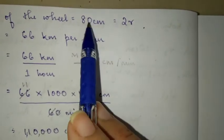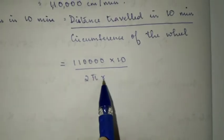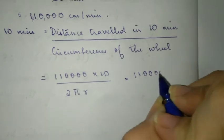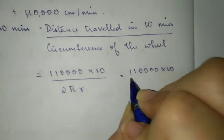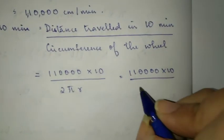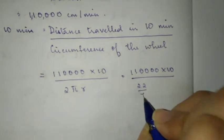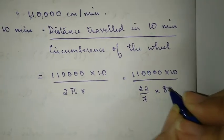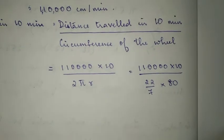Now 2r is 80 centimeter, so 2 into r is 80 centimeter. Substitute: 110,000 into 10 divided by 2r which is 80, and π which is 22 by 7.